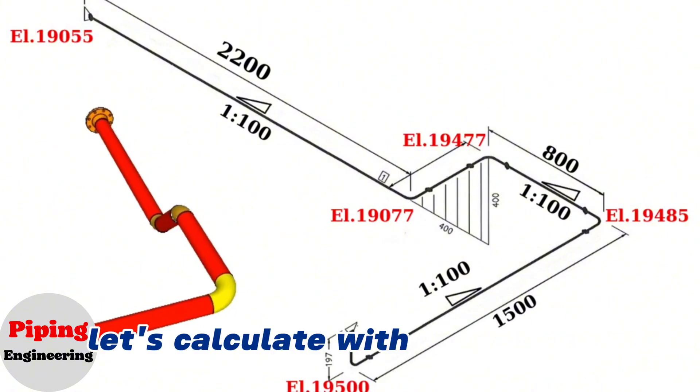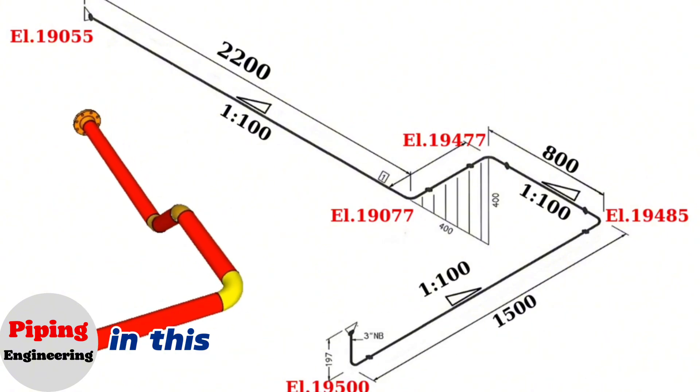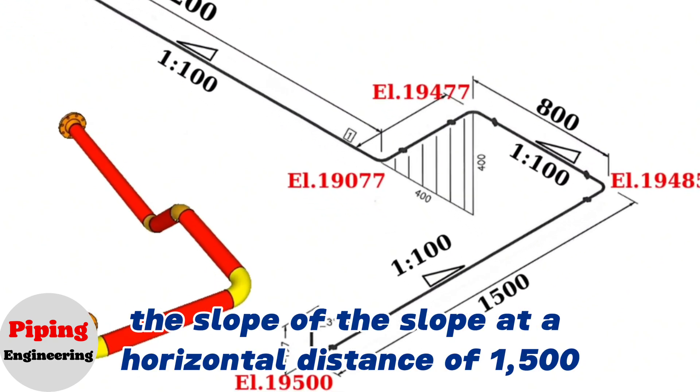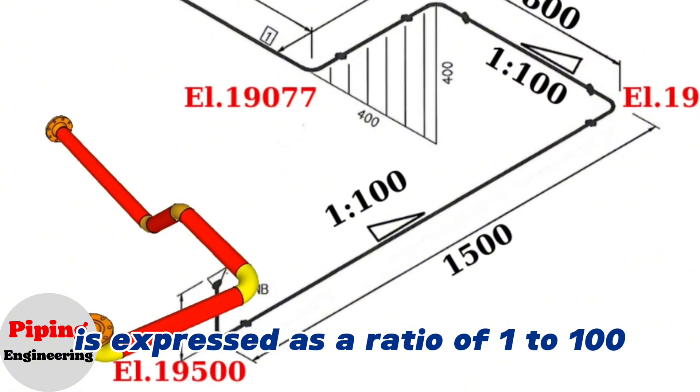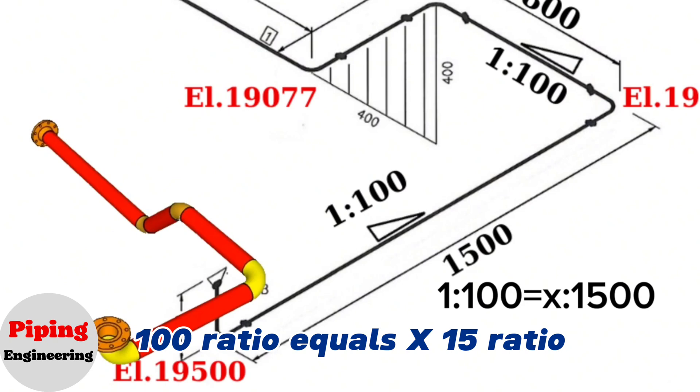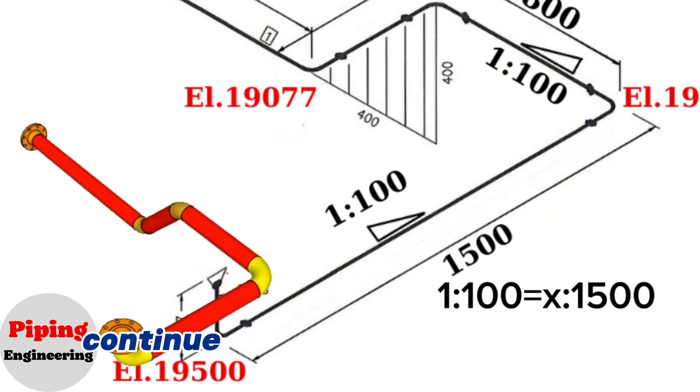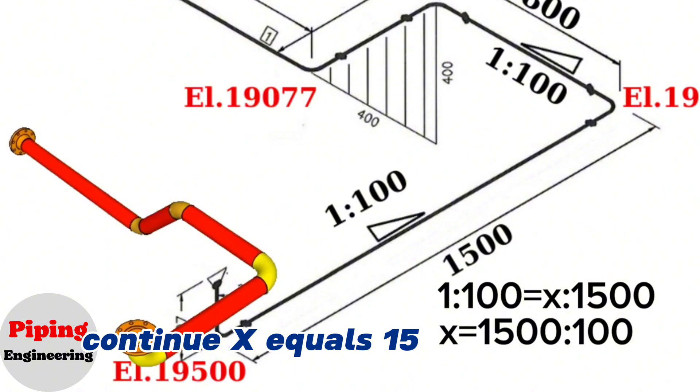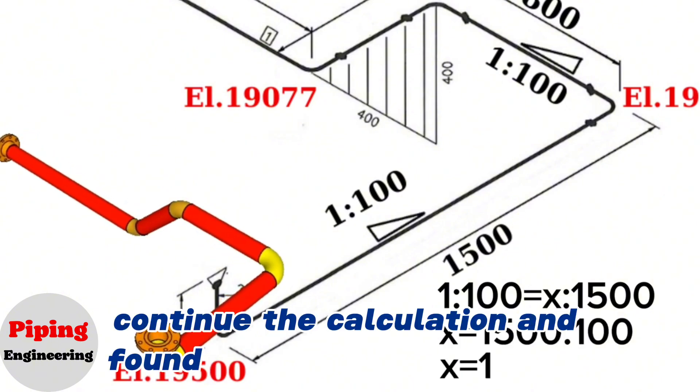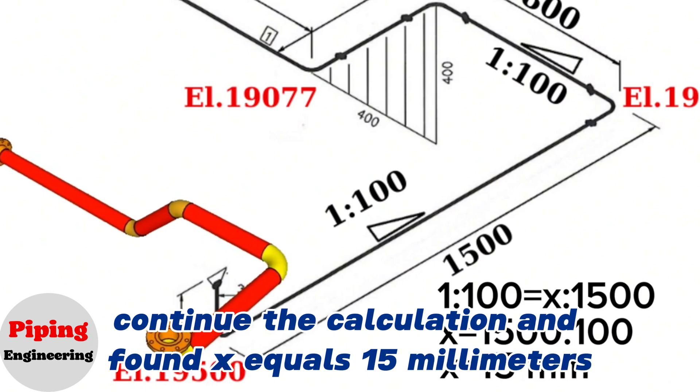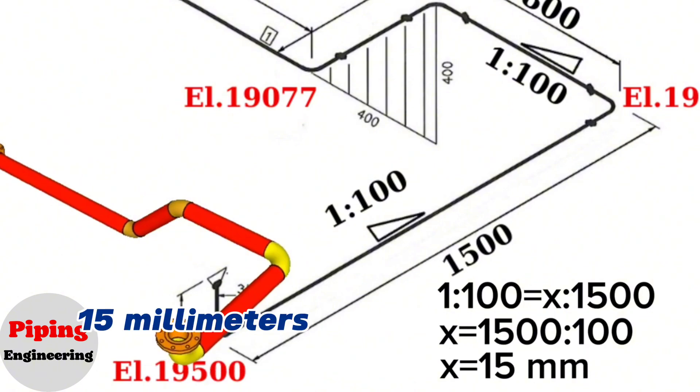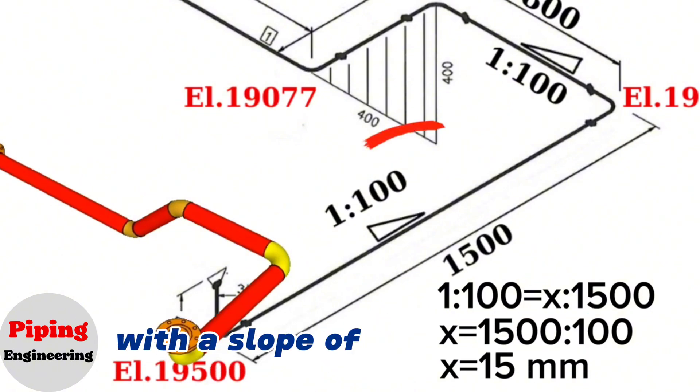Let's calculate with slope ratio in this example. In this pipe isometric drawing, the slope at a horizontal distance of 1500 is expressed as a ratio of 1 to 100. 1 to 100 ratio equals x to 1500 ratio. x equals 1500 to 100 ratio. Continue the calculation and found x equals 15 mm. This means that the 1500 mm long pipeline falls 15 mm down at the other end with a slope of 1 to 100 ratio.